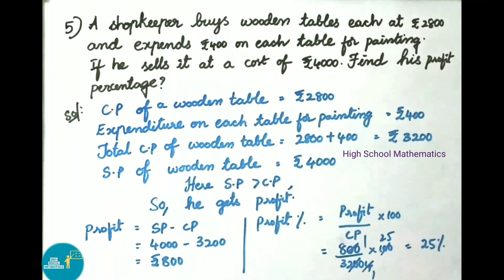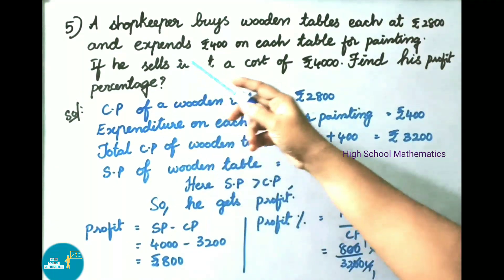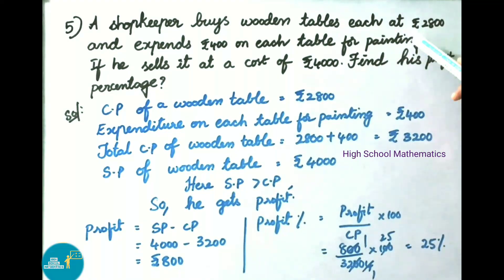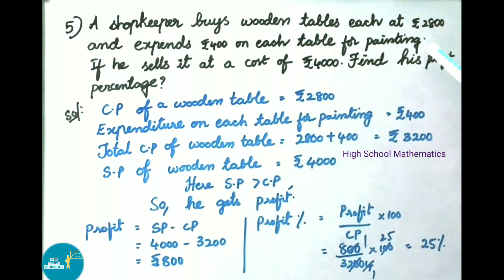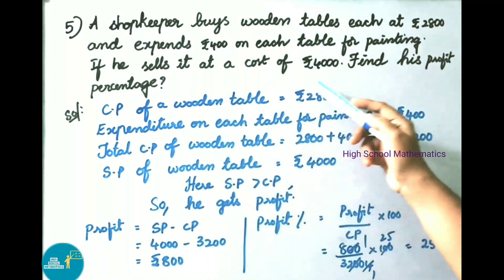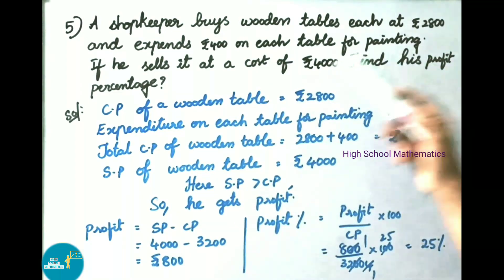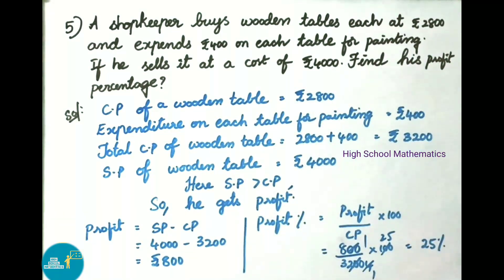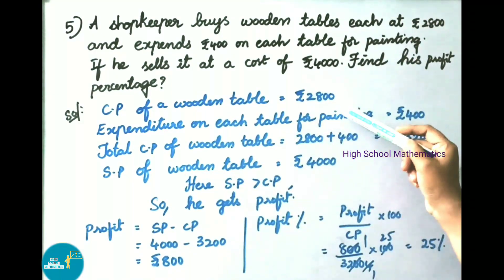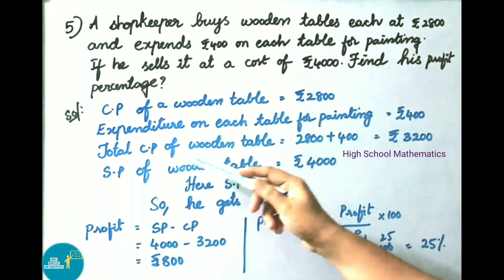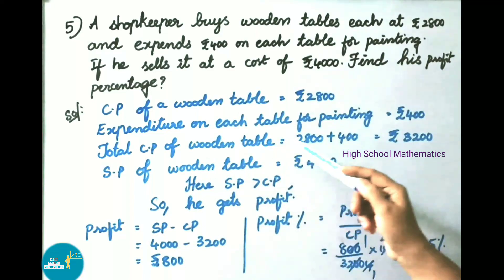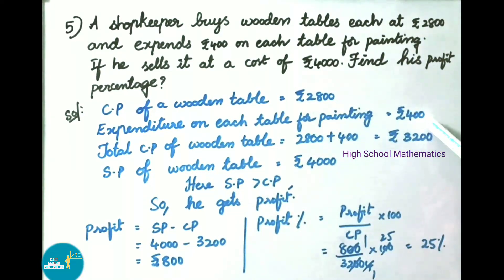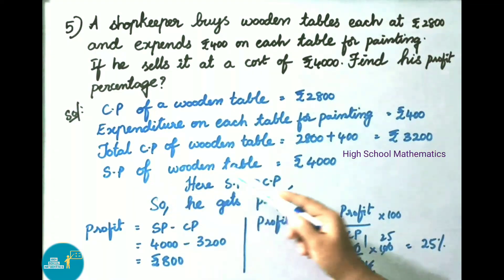Question number 5: A shopkeeper buys wooden tables each at 2,800 rupees and spends 400 rupees on each table for painting. If he sells it at 4,000 rupees, find his profit percentage. Solution: cost price of wooden table is 2,800 rupees, expenditure on painting is 400 rupees. Total cost price is 2,800 plus 400, that is 3,200 rupees. Selling price is 4,000 rupees.